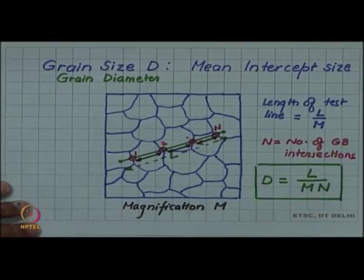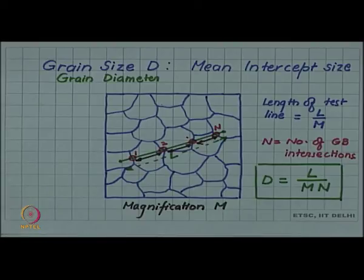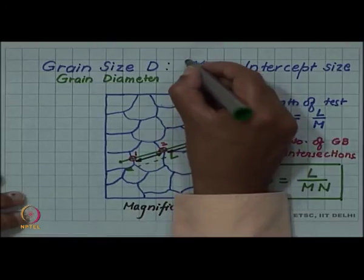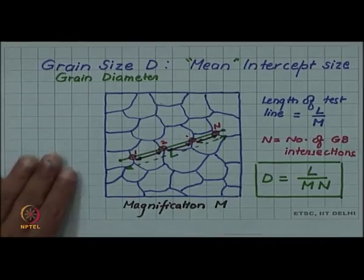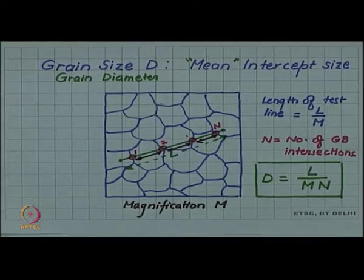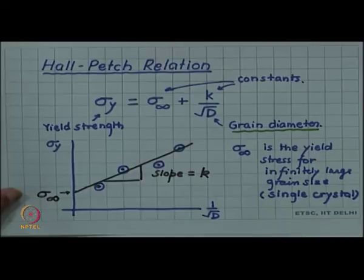Of course, you will have to take various test lines and take the mean of it. And that is why the phrase mean intercept grain size is used for this purpose. So this kind of grain size is what we are talking about when we want to use Hall-Petch relation.